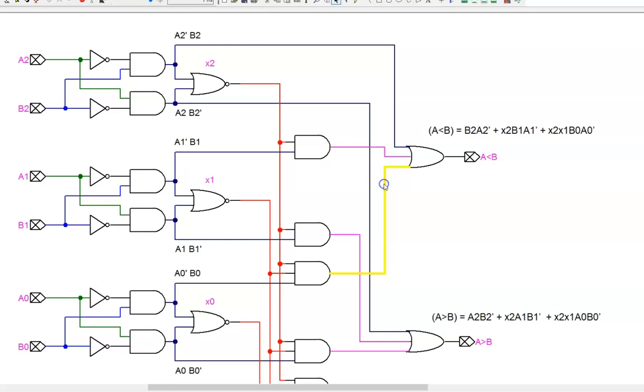Finally, the third case is if A2 equals B2, A1 equals B1, AND A0 is less than B0. A2 equals B2 is provided by this X2 wire. A1 equals B1 is provided by this X1 wire. A0 is less than B0 is provided by this A0 prime and B0 wire. These three terms are ANDed together, with the result passed into the OR gate.